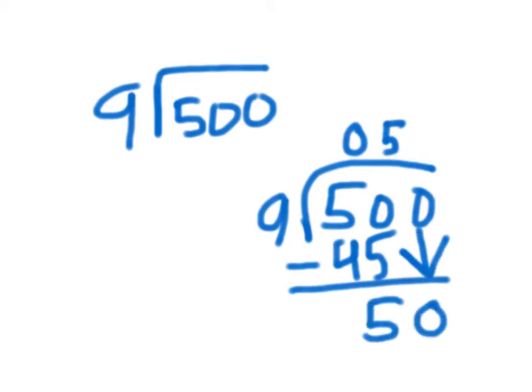so that would be 50 again. So you'd do 5 again. And then you would subtract 45 from 50, which would be 5.